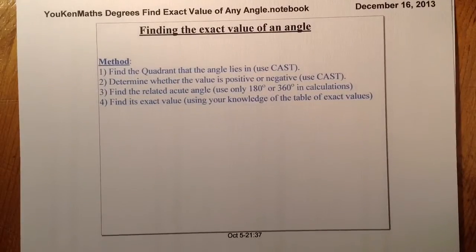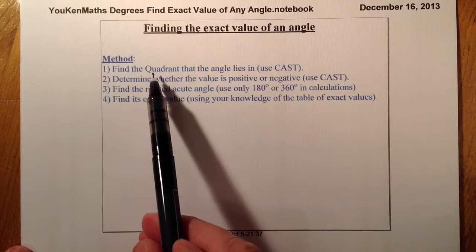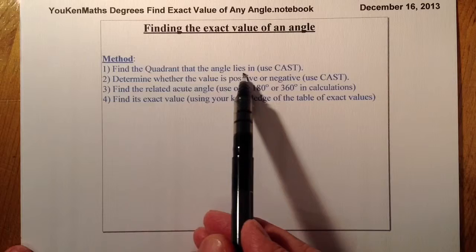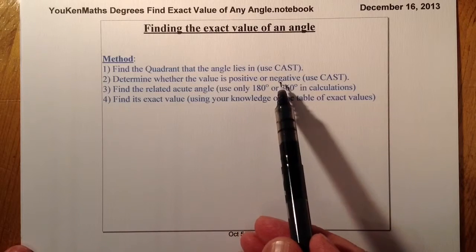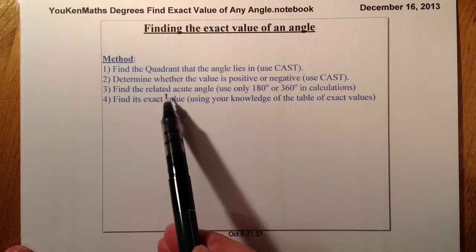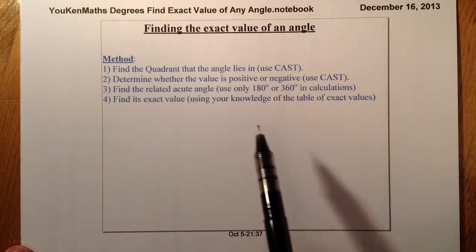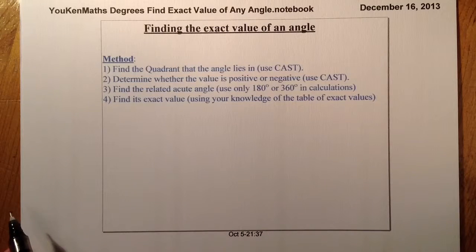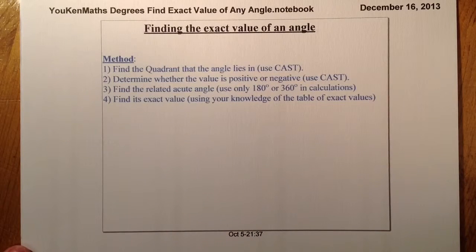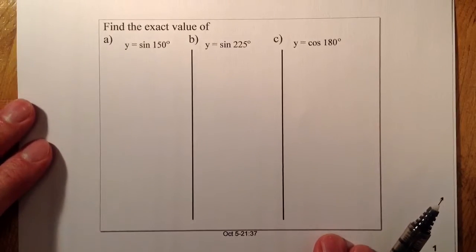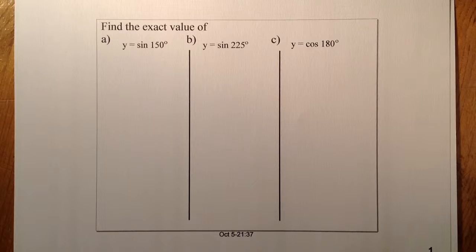The method I'll be following: first, use the CAST diagram to find which quadrant the angle lies in. Then use the CAST diagram to determine whether the angle is positive or negative in that quadrant. Then find a related acute angle, using only the horizontal line — 180 or 360 — in calculations. Finally, find the exact value using the table of exact values.